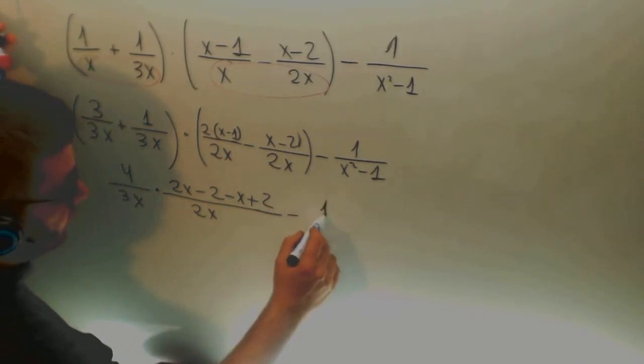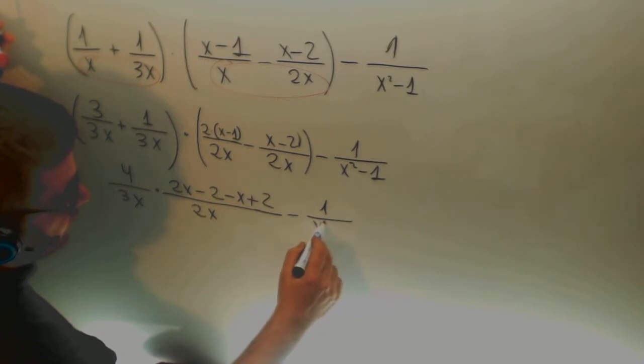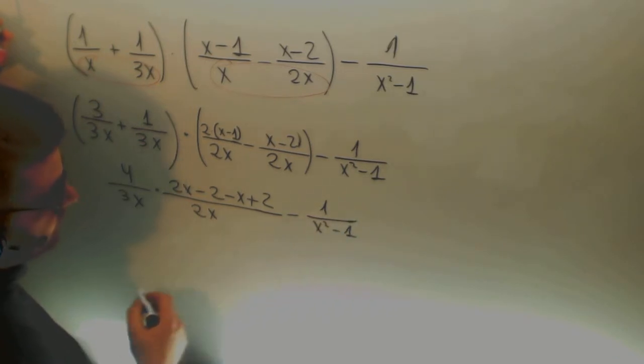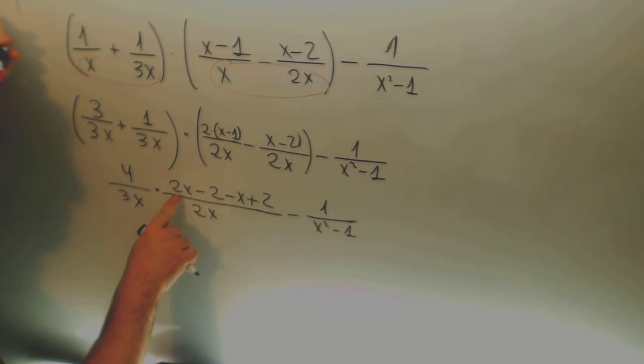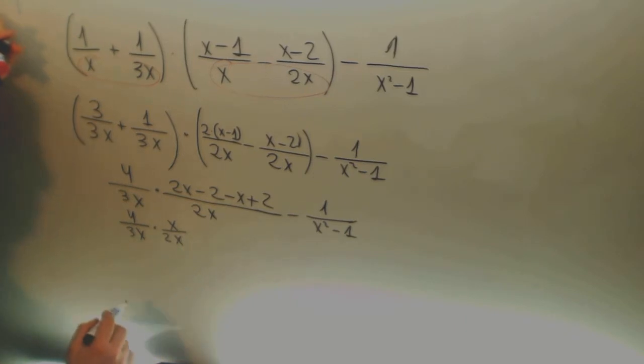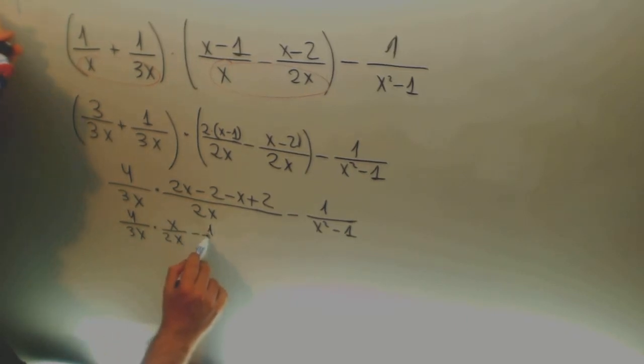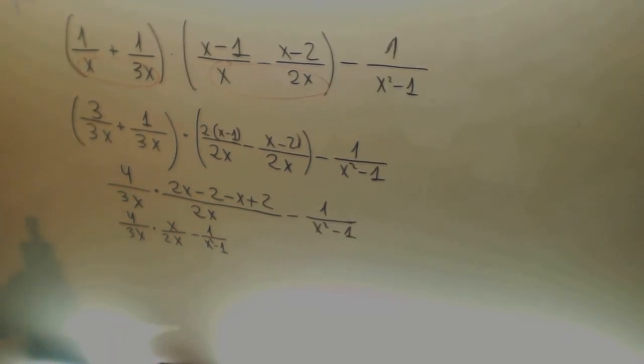That's the most habitual mistake. Then I can simplify this. And I have 4 divided by 3x by x divided by 2x minus 1 divided by x squared minus 1.